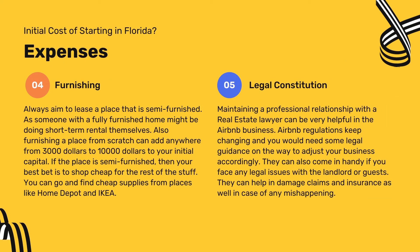Expense 4: Furnishing. Always aim to lease a semi-furnished place, as a fully furnished home owner may be doing short-term rental themselves. Furnishing from scratch can add $3,000 to $10,000 to your initial capital. If semi-furnished, shop cheap at places like Home Depot, IKEA, or even Walmart. Expense 5: Legal Consultation. Maintaining a relationship with a real estate lawyer is very helpful — Airbnb regulations keep changing, and a lawyer can assist with legal issues involving landlords, guests, damage claims, and insurance.